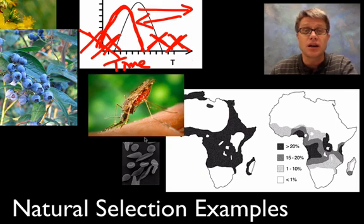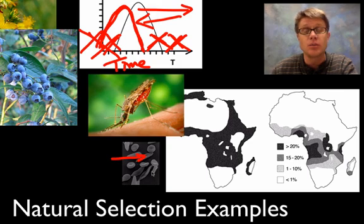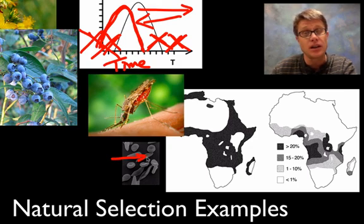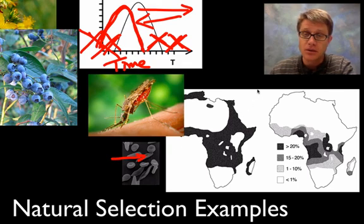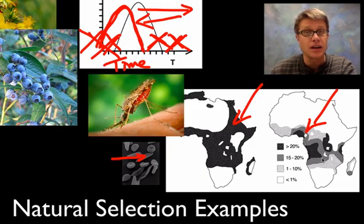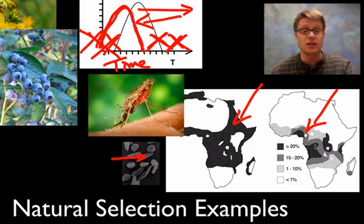Another example of natural selection is the sickle cell gene. Sickle cell anemia is a mutation in the hemoglobin protein found inside the blood. If you're heterozygous for the trait, it allows you to survive a malarial infection. A graph shows where malaria is found alongside the allele frequency of sickle cell disease in people who live there. Those that had that allele were able to survive, so we've seen an increase in that allele frequency in those populations because it offers protection against malaria.